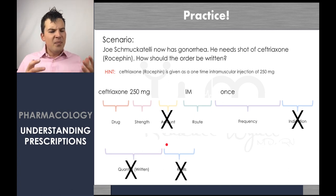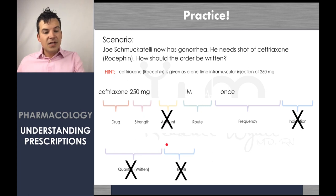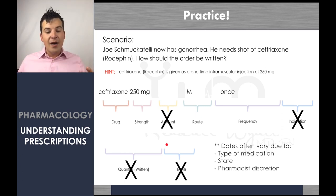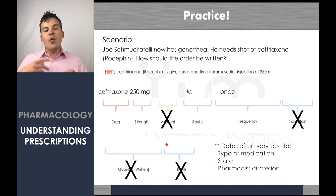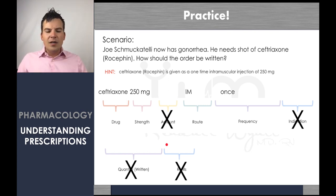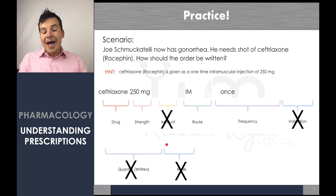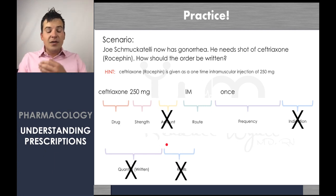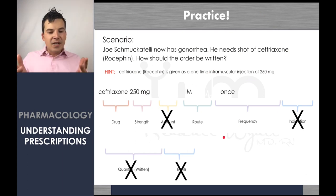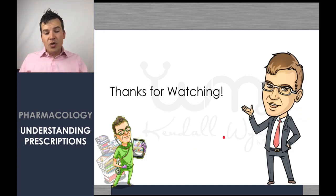Another example: an EpiPen is written as an IM injection, once as needed for anaphylaxis, with maybe two refills and quantity of one. A prescription doesn't expire until six to twelve months depending on where you are, so you can refill it once the EpiPen expires. Lotions or creams — for example for psoriasis — may be written 'apply to the affected area as needed' and may have multiple refills not necessarily indicating a 30-day supply. This is the general basics of how to write and read a prescription — the big thing is always following that standard formula.